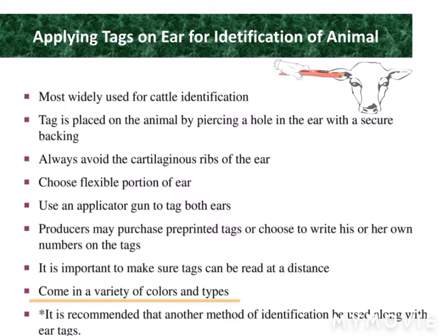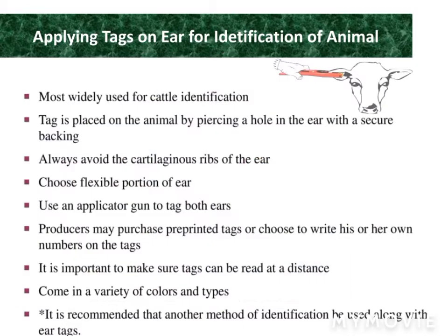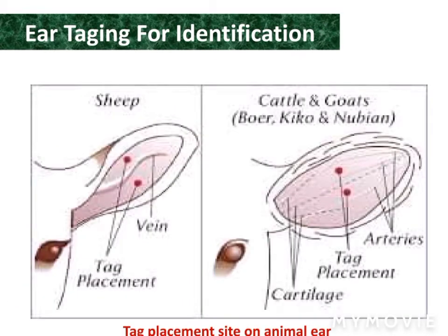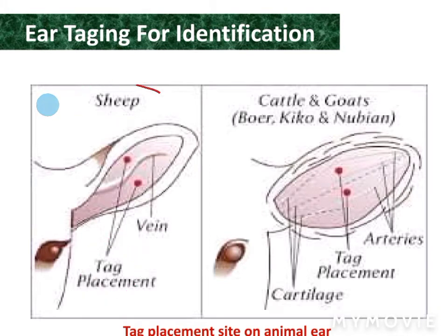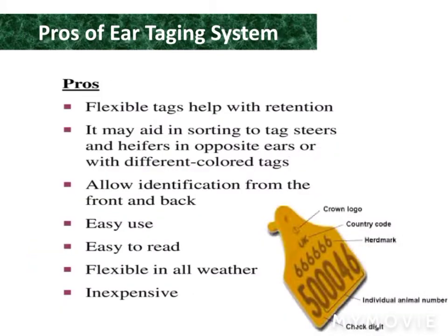Use an applicator gun. You can also use management numbers. Make sure tags can be read from a distance. Tags come in a variety of colors and types. Always use a minimum of two methods of identification for each animal. The perfect tagging place for sheep is here as shown, and for cattle and goat, watch the right side of the slide to avoid cartilage damage.